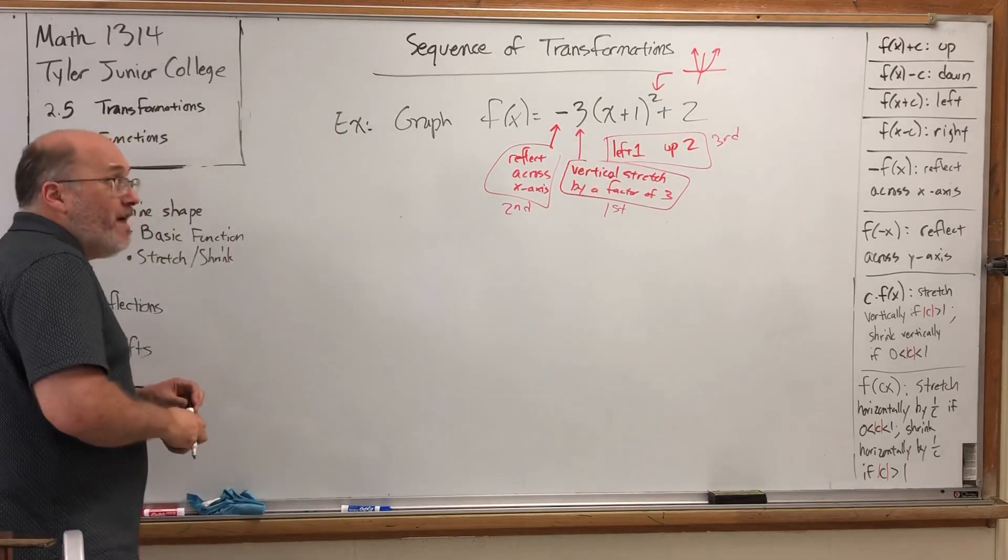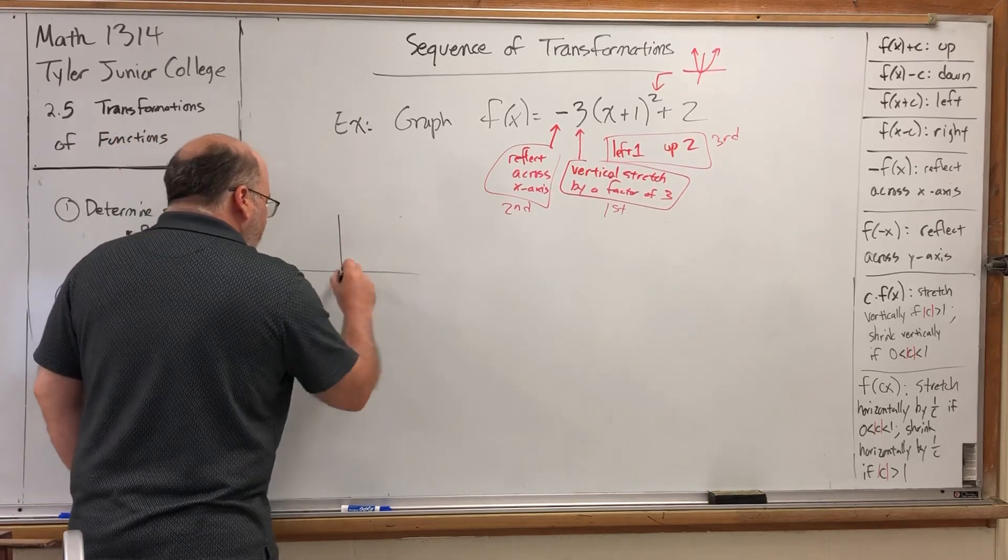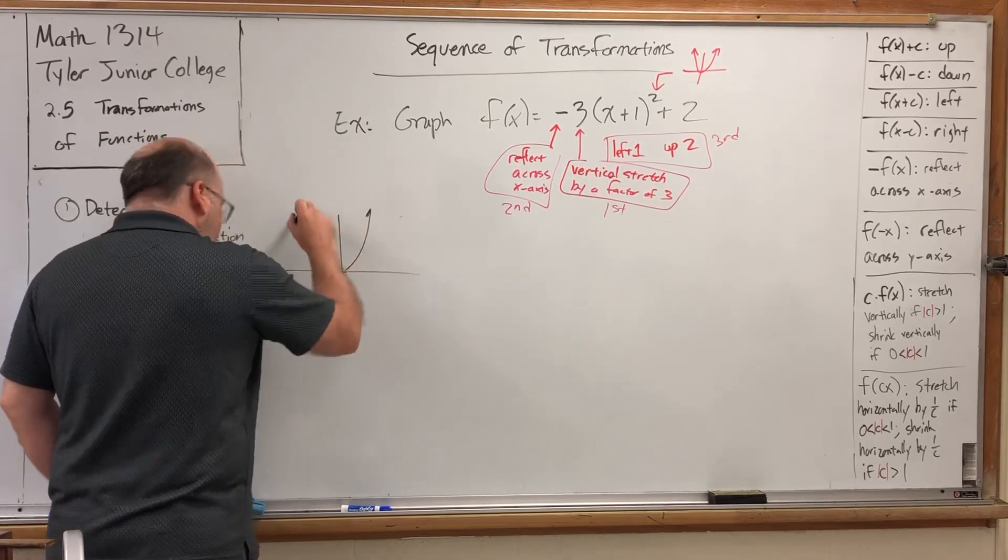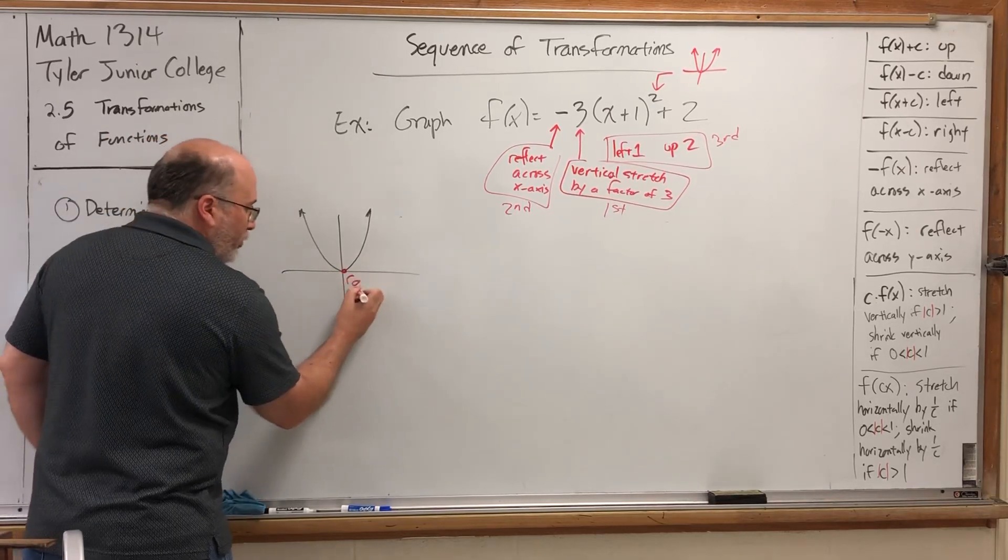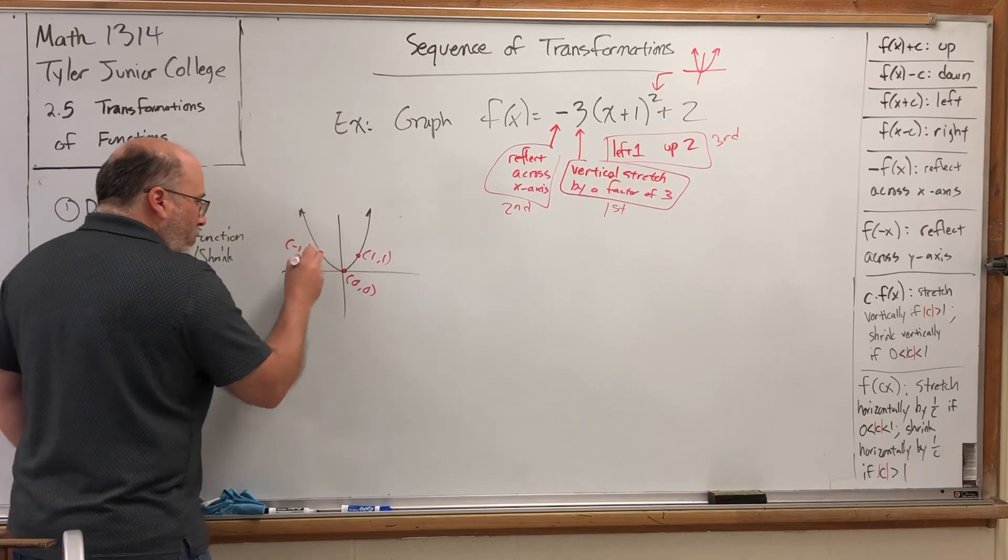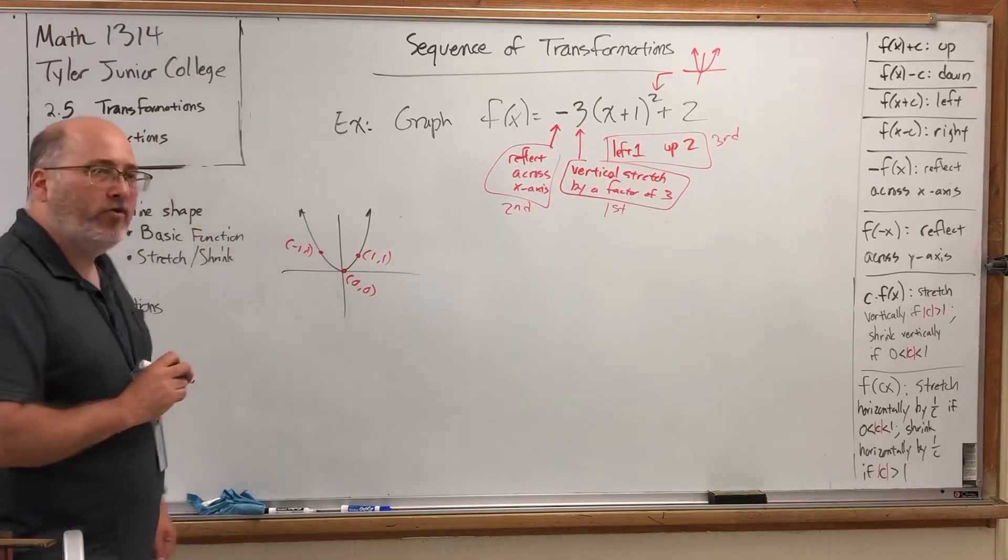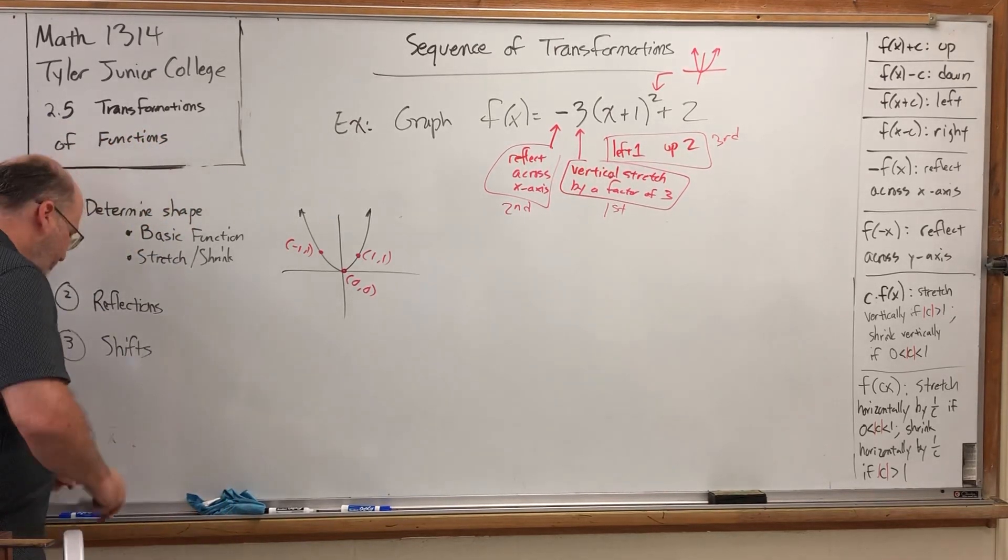So let's... You can do all this on one graph, but you can also do it on a sequence of graphs. For example, the original graph has three points of reference that we're going to keep up with. The origin, 0, 0, 1, 1, and negative 1, 1. You're welcome to keep up with more reference points like 2, 4 or negative 2, 4 on this graph.